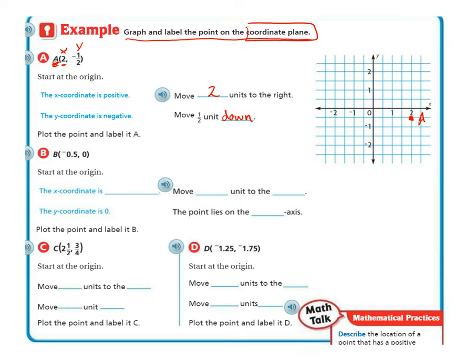So again, A is located at 2, negative 1/2. We get that because x is 2, 1, 2 on the x-axis. They told us 2 is right here. And then negative 1 on the y-axis. So we've got to move down halfway to 1. Negative 1 would be right here, we move halfway towards that.